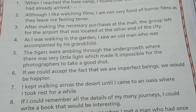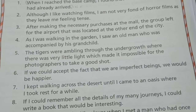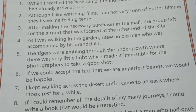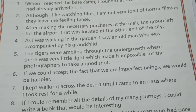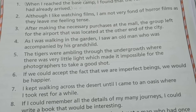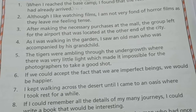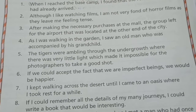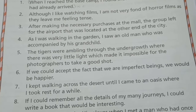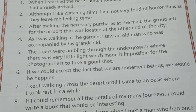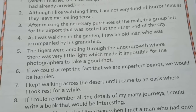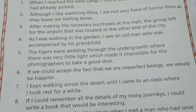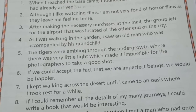Fourth: 'as I was walking in the garden' is an adverb clause of time modifying the verb 'saw'; 'who was accompanied by his grandchild' is an adjective clause qualifying 'man'.